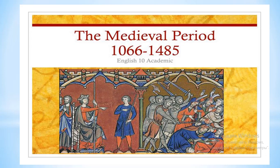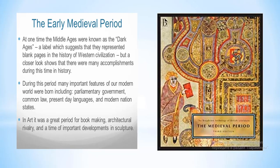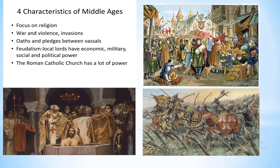At one time, the Middle Ages were known as the Dark Ages, a label suggesting they represented black pages in the history of Western civilization. But a closer look shows many accomplishments during this period. Many important features of our modern world were born then, including parliamentary government, common law, present-day languages, and modern nation-states. In art, it was a great period for bookmaking, architectural achievement, and important developments in sculpture.